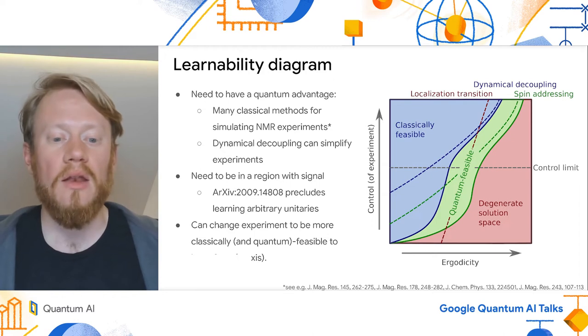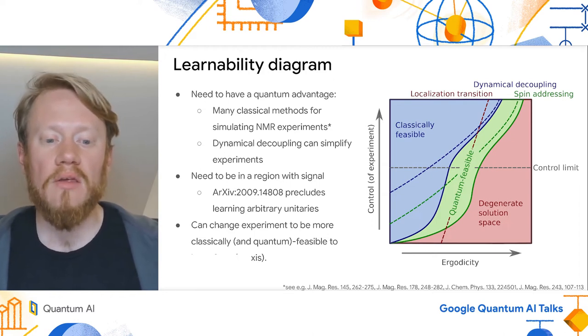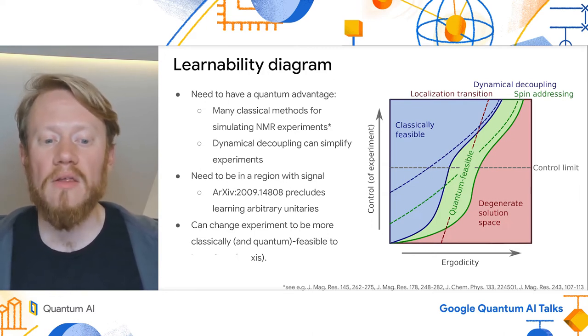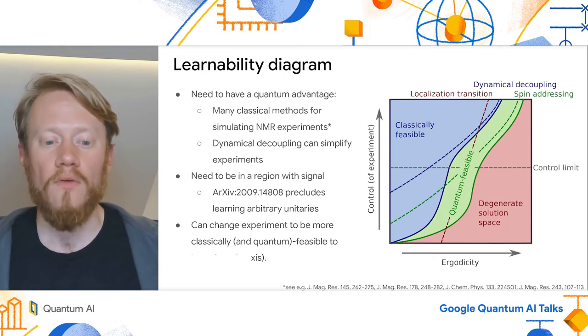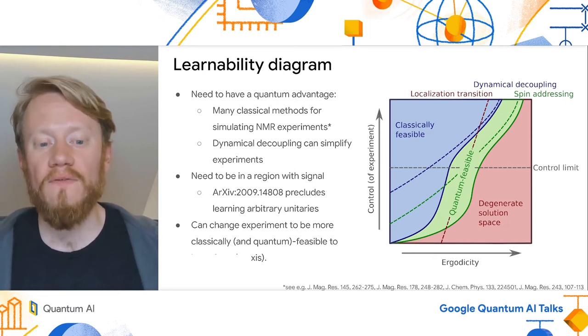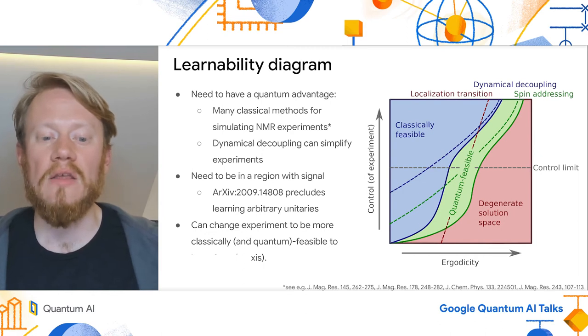This leaves us with a narrow Goldilocks zone for quantum advantage, which I'll summarize in this cartoon here on the right. Here, the x-axis is a system ergodicity, and the y-axis is a handle on how much control we have over our experiment. As we increase our control, we can effectively make the system less chaotic and easier to learn.